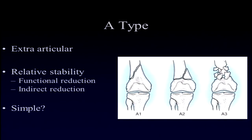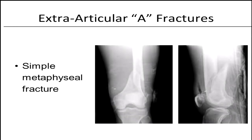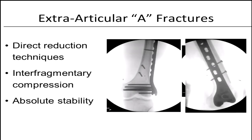For type A fractures, you're looking for relative stability and a functional reduction. In general, you have two major fragments, and if you concentrate on length, rotation, and alignment with appropriate technique, the fracture will heal. Simple metaphyseal fractures can usually be treated with direct reduction techniques if necessary, particularly with significant comminution, an unstable pattern, or an open fracture requiring debridement. In some cases, absolute stability with direct plating is appropriate.